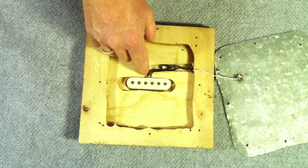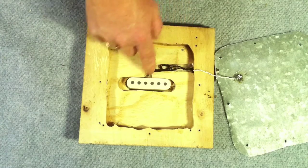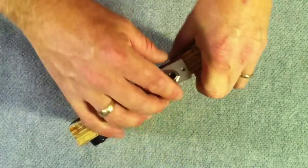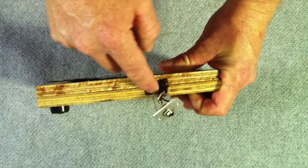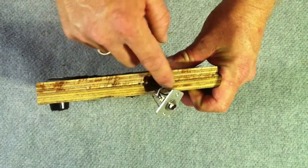But before I glued them together I routed a channel for my wires to travel through from the pickup to the jack plate, and cut out a hole or a channel in each piece of ply so that they lined up when they were glued together.